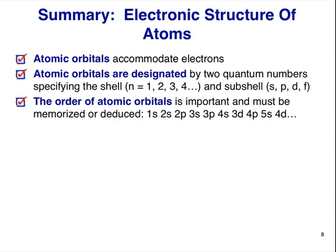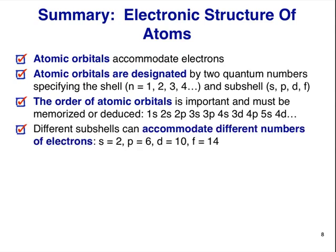The order of the orbitals, in terms of potential energy or filling, is important. You must memorize it, or be able to work it out from the orbital filling diagram or periodic table. Different subshells accommodate different numbers of total electrons. Any s orbital can hold 2 electrons, any p orbital 6 electrons, d orbitals can accommodate 10 electrons, and f orbitals can accommodate up to 14 electrons.